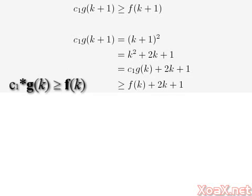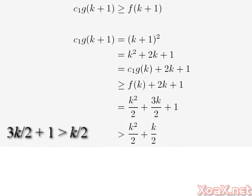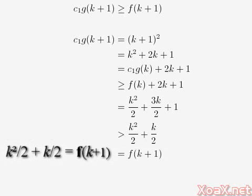Using the inequality for the kth case, we get this. A substitution for f(k) and some simplification gives us this. This next line follows from the fact that k/2 is less than 3k/2 + 1. We finish the proof by substituting f(k+1) for k²/2 + k/2, which is what it equals.